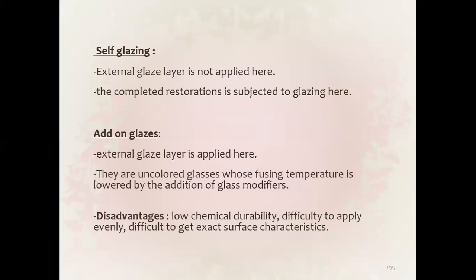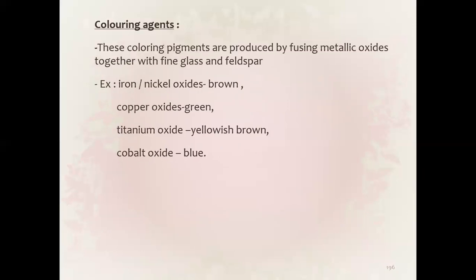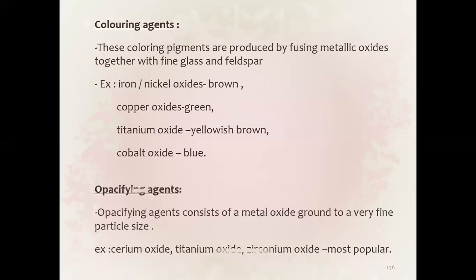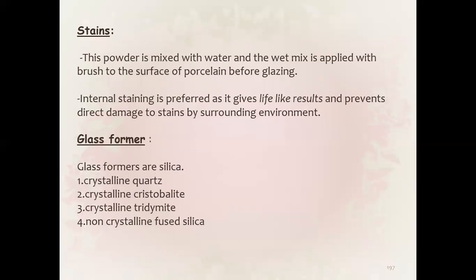Disadvantages of glazes: low chemical durability, difficult to apply evenly, difficult to get exact surface characteristics. Coloring agents such as iron oxide, nickel oxide, copper oxide, titanium oxide, and cobalt oxide give different colors. Opacifying agents consist of different metal oxides ground to very fine particle size. Stains are produced by mixing the powder with water — the wet mix is applied with a brush to the porcelain surface before glazing.